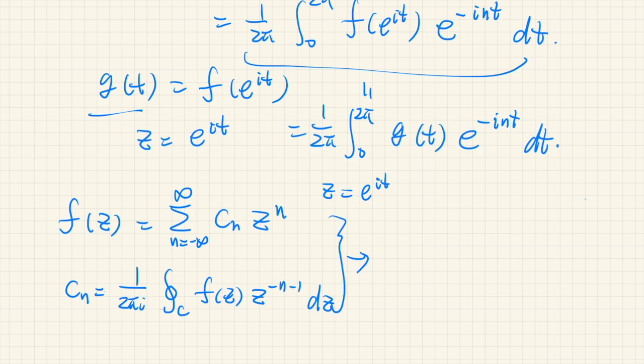Then we have f of e to the power of it equals to sum n from negative infinity to positive infinity cn e to the power of int. So this is a Fourier series.